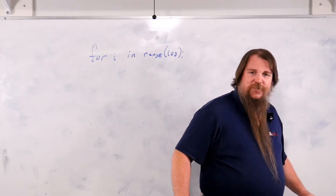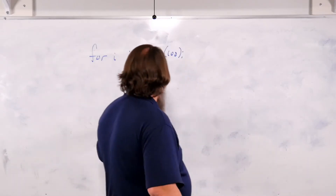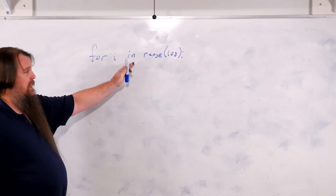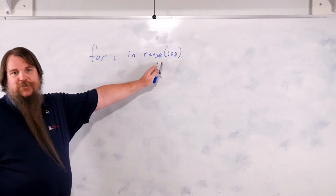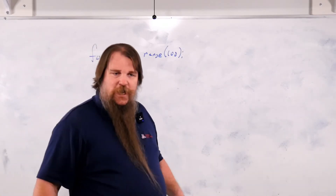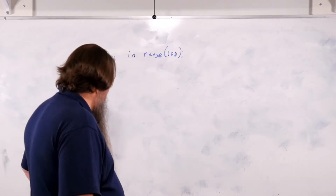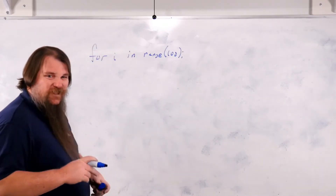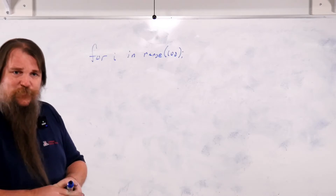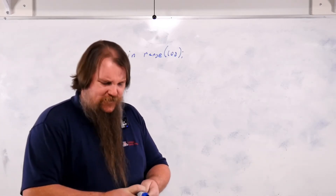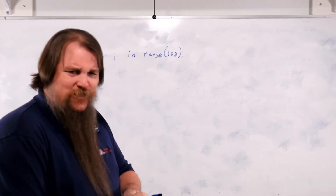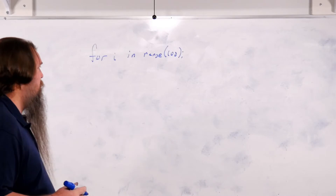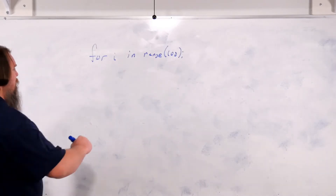It turns out that this syntax — `for variable in something` — is actually a general purpose syntax that you can use with lots and lots of Python data types. This is where Python really starts to shine, in my opinion.